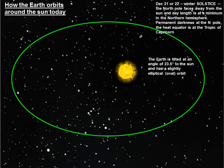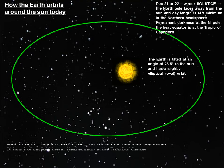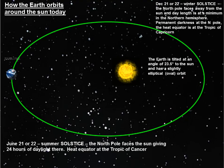Three months later, on March 21st or 22nd, we've got the equinox. And three months after that, on June 21st or 22nd, you've got the summer solstice. The North Pole faces the Sun, giving 24 hours of daylight there. The heat equator is at the Tropic of Cancer.